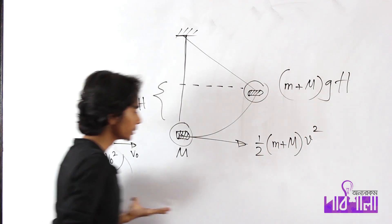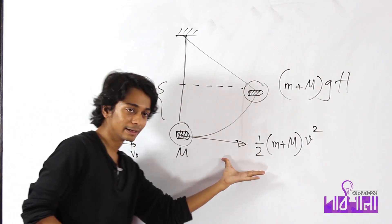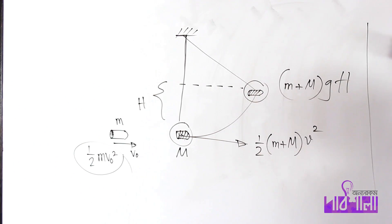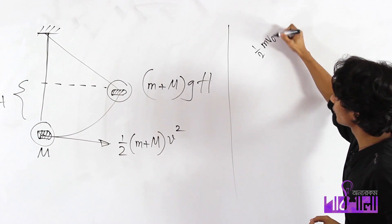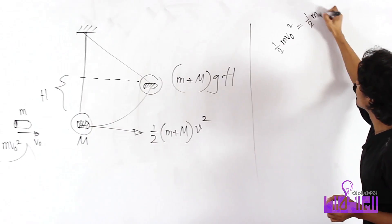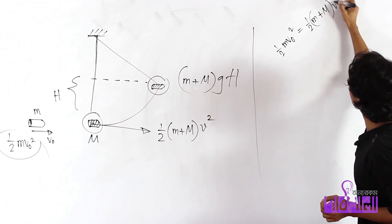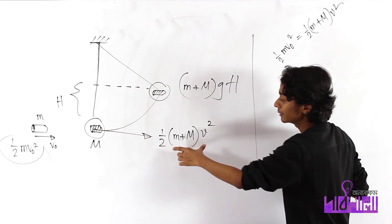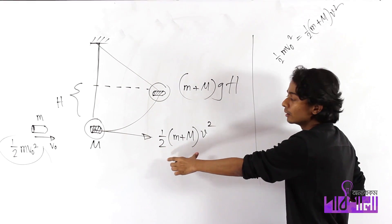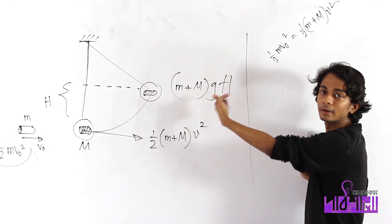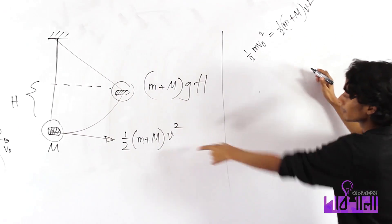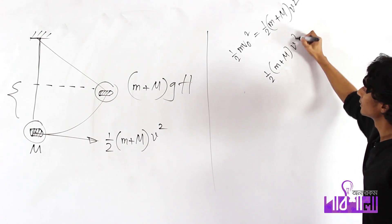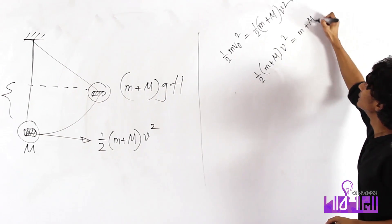Half m v-not squared equals half m plus M, v squared. And now we have to have an equation of this. I have to have a question now. That is: half m plus M, v squared, equal to m plus M, gh.